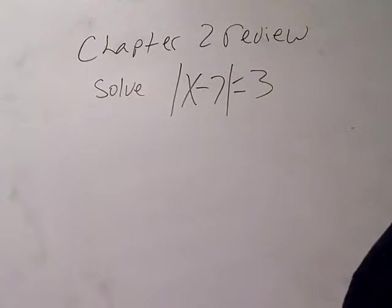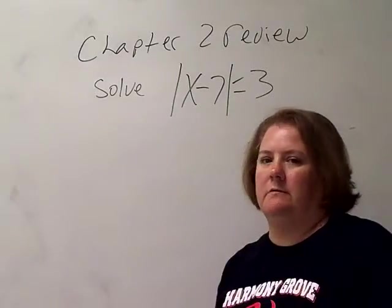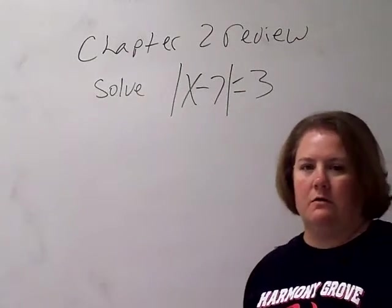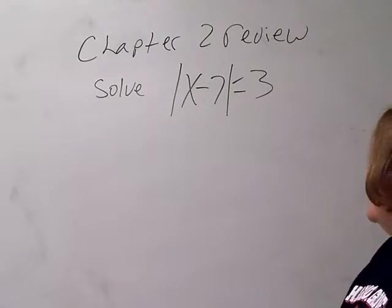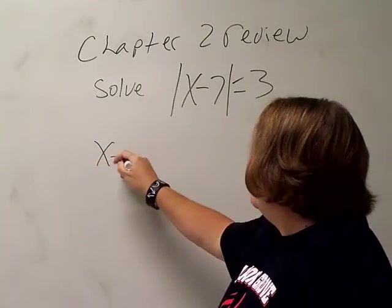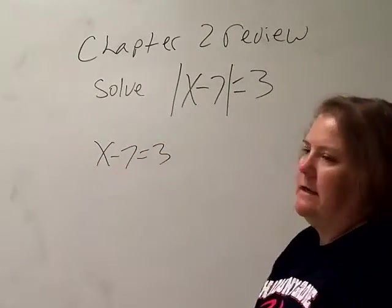All right, remember when we have absolute value, we're talking about the distance you are from zero on the number line, so it could be a distance to the right or a distance to the left, which means I need to write two equations out of this. I get my first equation by dropping my bars and writing everything just like it is.